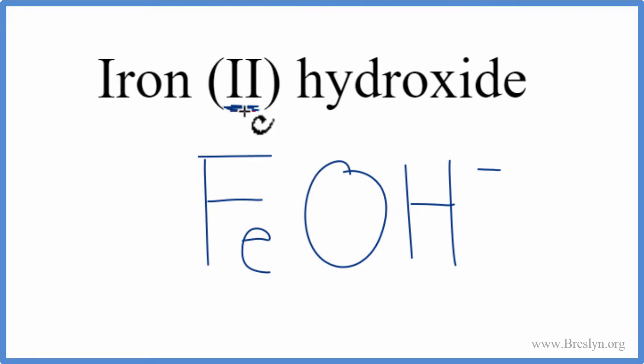Iron, we're told because of the Roman numeral 2, that's a 2+ ionic charge. The hydroxide, we said that was 1-. So these charges, they need to add up to 0 since iron (II) hydroxide is a neutral compound.